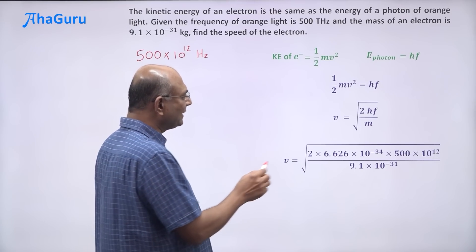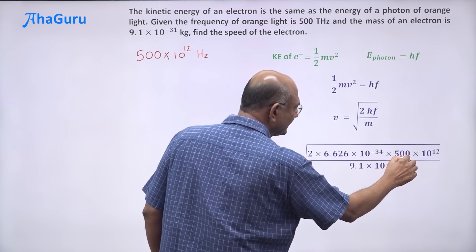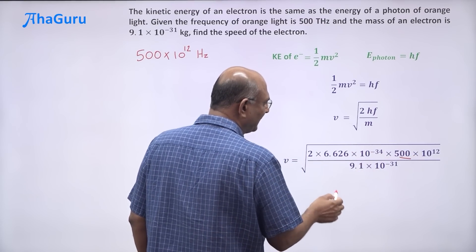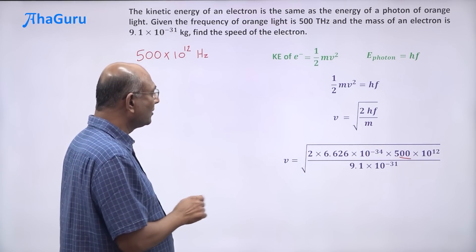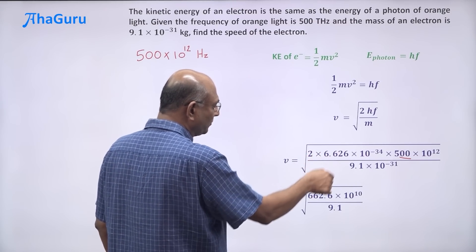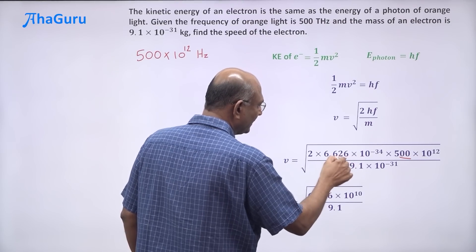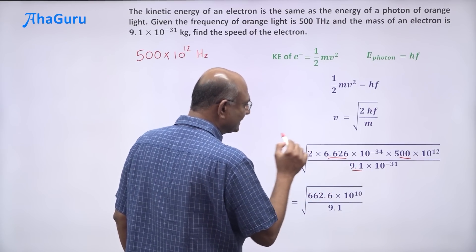This is speed. So, if I now try to calculate, what am I going to get? I am going to take this 100 that is there in 500, put it here so that I can get it as 662.6. 662.6. 9.1, I am going to write as it is.